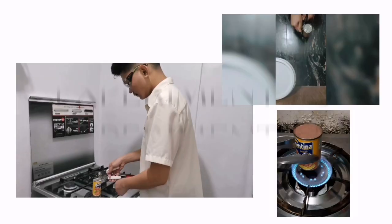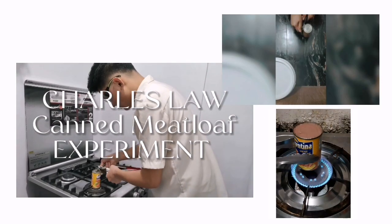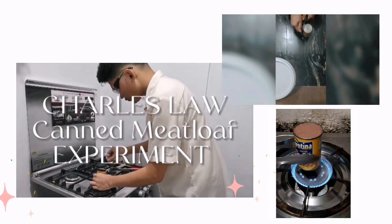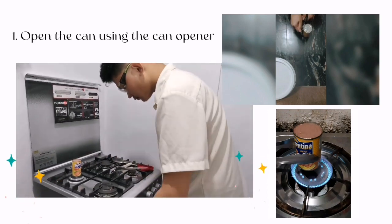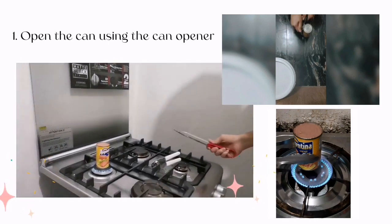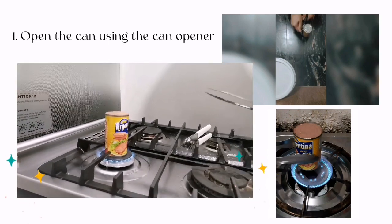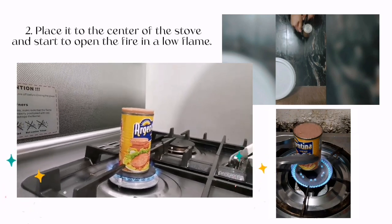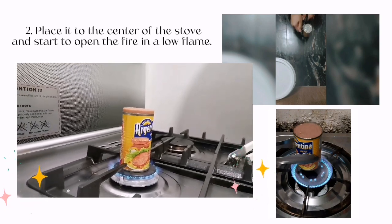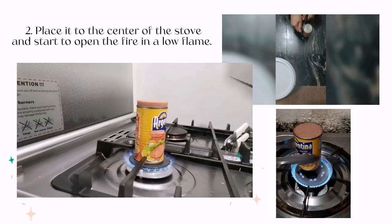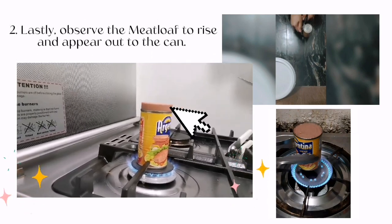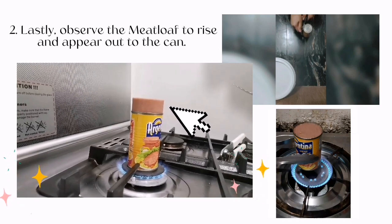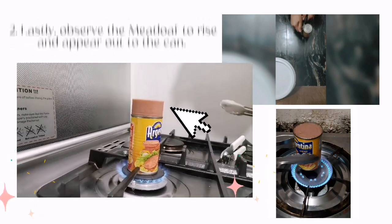For this experiment, we will use a canned meat loaf for the application of Charles's Law. First, we will open the can using a can opener. Next, place it in the center of the stove and start the fire on a low flame. Lastly, observe the meat loaf rise and appear out of the can. This experiment demonstrates the application of Charles's Law.